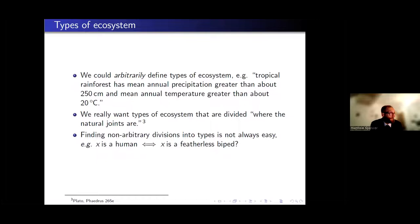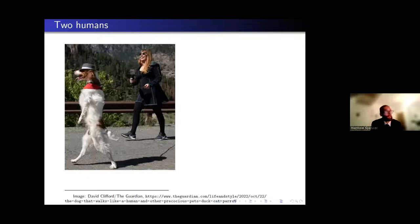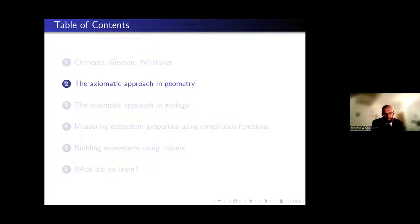A well-known example from Plato is the definition of a human as a featherless biped. You could argue there's no continuum between things that are featherless bipeds and things that aren't. So if we've chosen our definition correctly, we should be able to use this to determine what is a human and what isn't. Although it's not necessarily straightforward to find definitions of categories when genuine categories exist, we think we would be able to find some suitable definition.